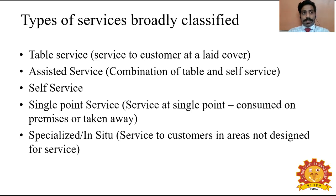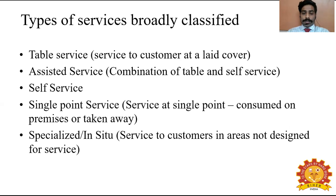Assisted service is a combination of table and self-service. Table service happens alongside self-service, with food and beverage staff behind the buffet to assist you in serving the food. A waiter takes care of each table in table service, but in assisted service they handle four different varieties of food, assisting the guest if there is any confusion — for example, if the guest has any allergies or doubts about ingredients.